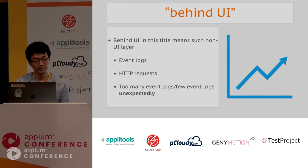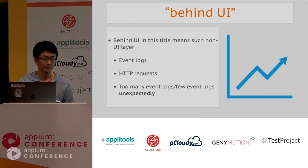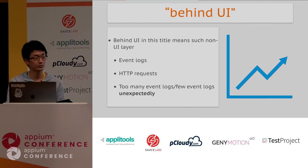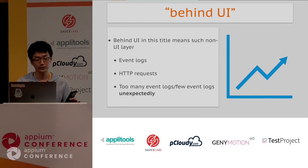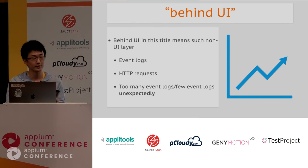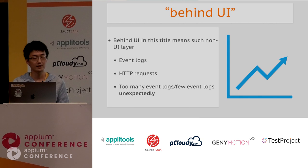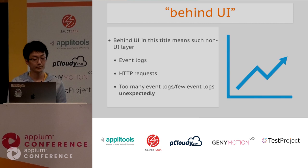This talk's title is 'How to Uncover Breaking Changes Behind UI.' The 'behind UI' means something happens in the non-UI layer. The breaking changes refer to results like too many event logs happening, or too few event logs happening unexpectedly — some regression we are not sure about, something unexpected happened — and as a result the data becomes unreliable.